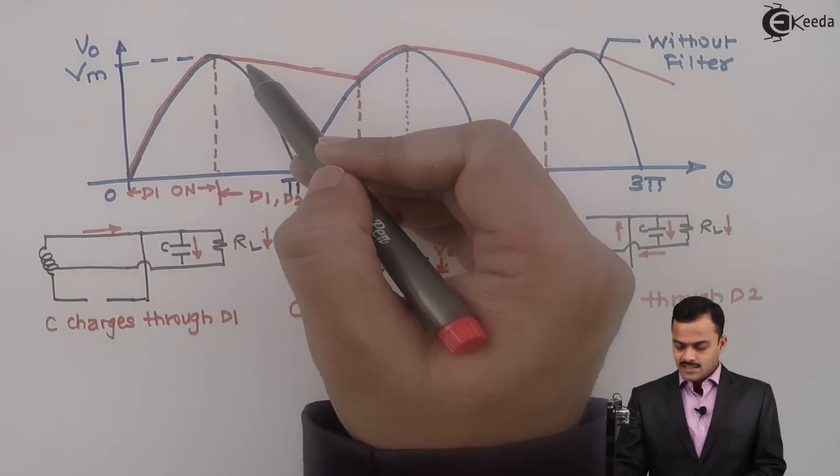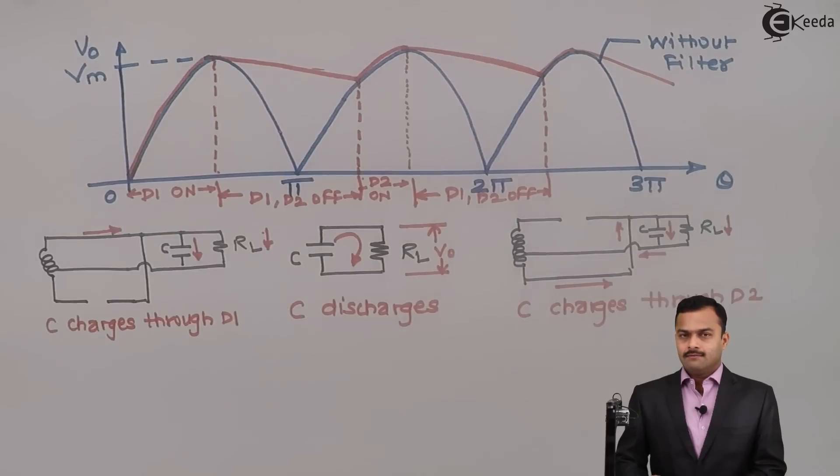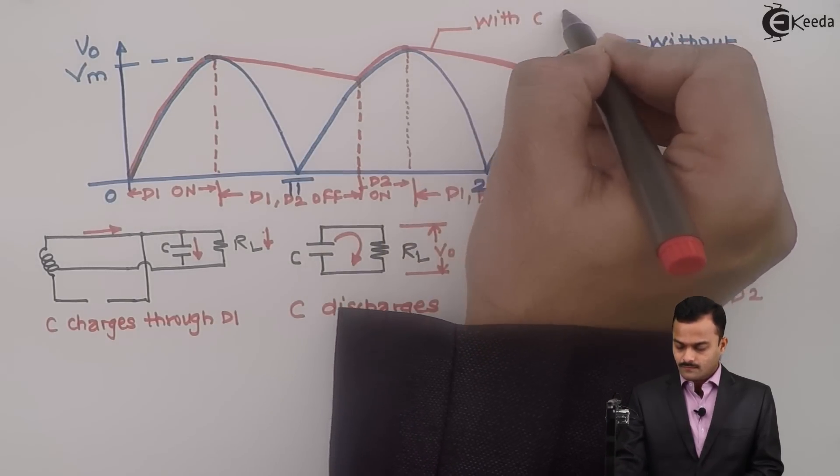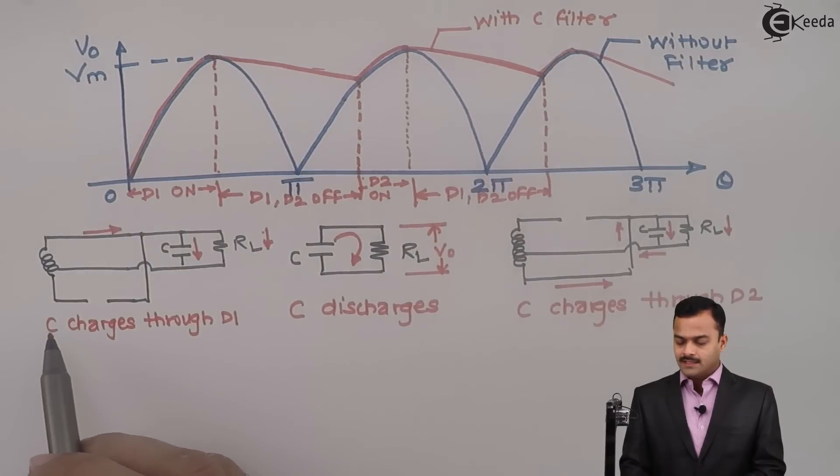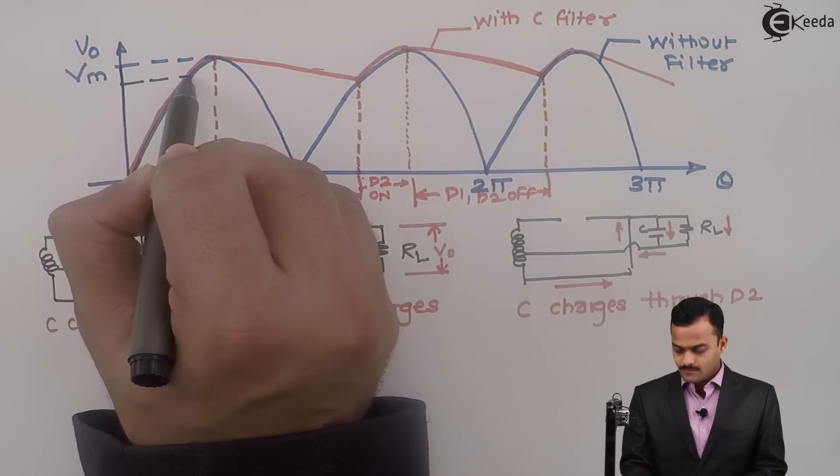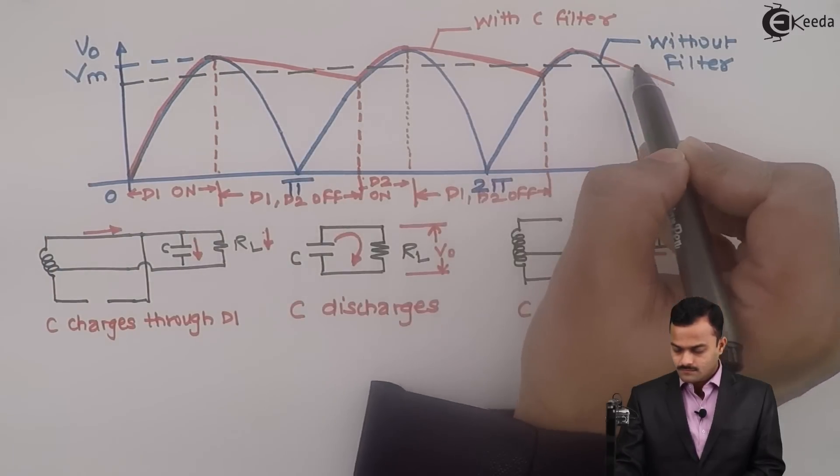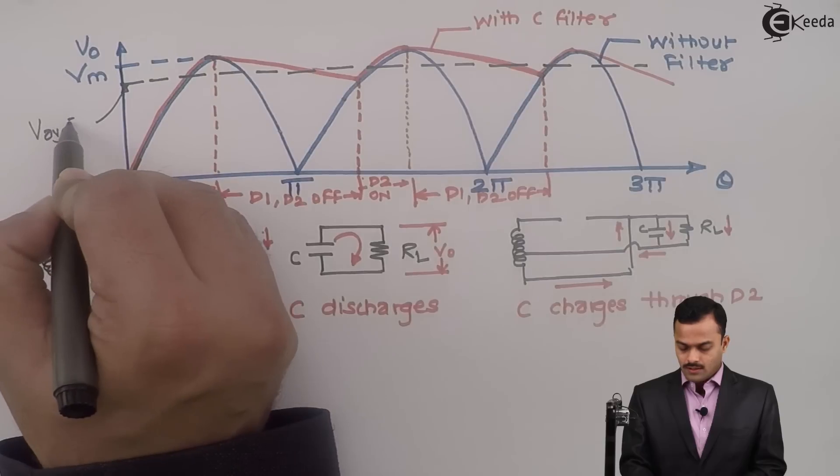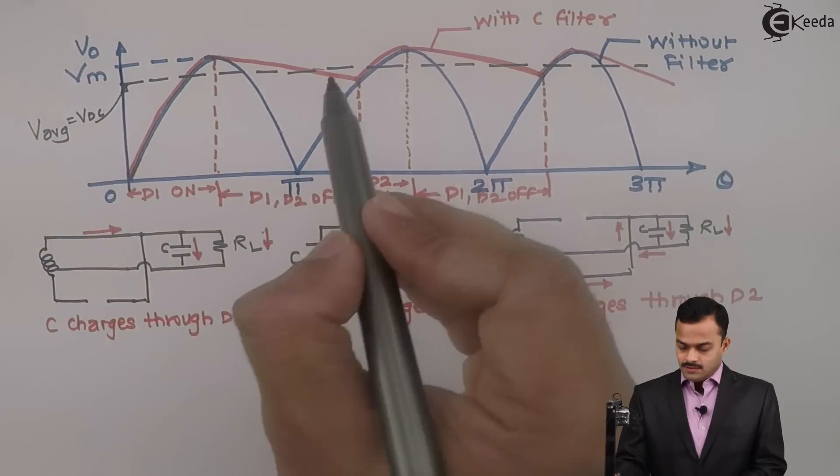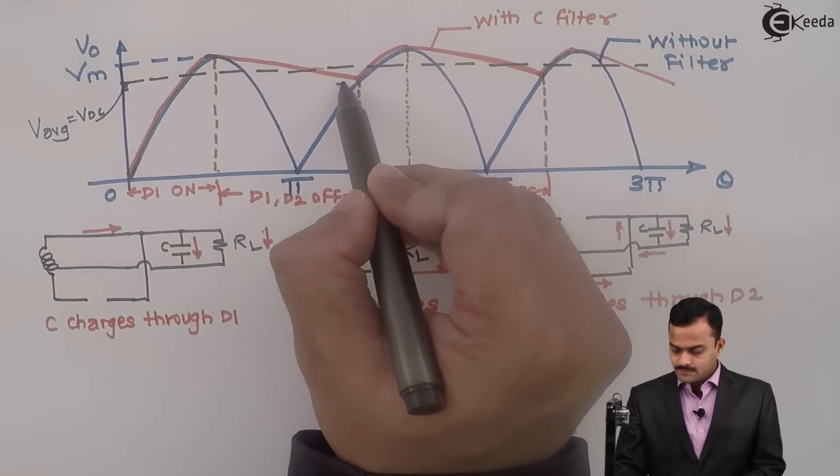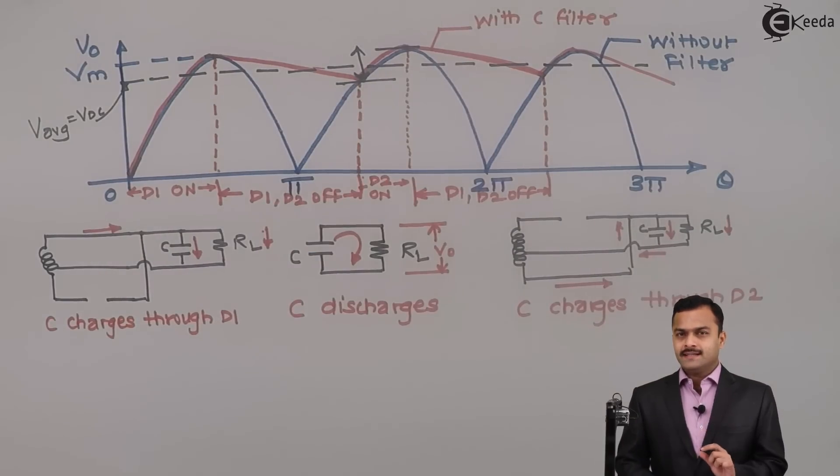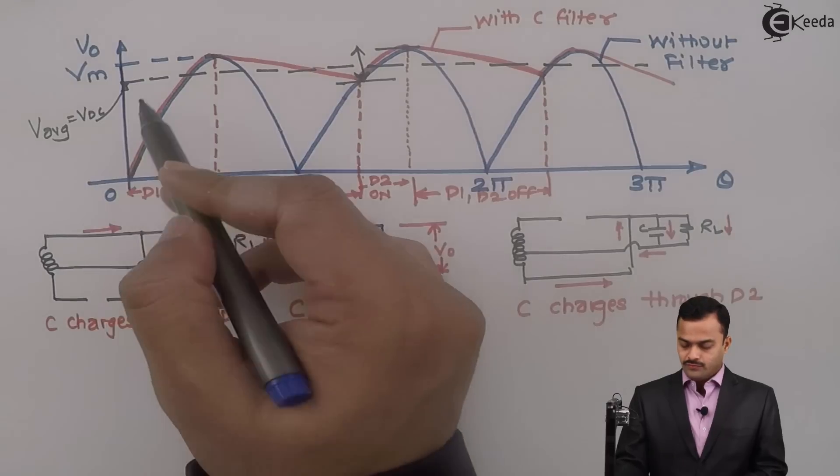You will get the next waveform like this. Here, this is the waveform you are getting without filter. But if you connect a capacitor filter across load, you will get this kind of waveform. If you draw an average line, suppose it is something like this, I can consider as V average or ultimate DC value. The difference between these two peaks is called ripple.